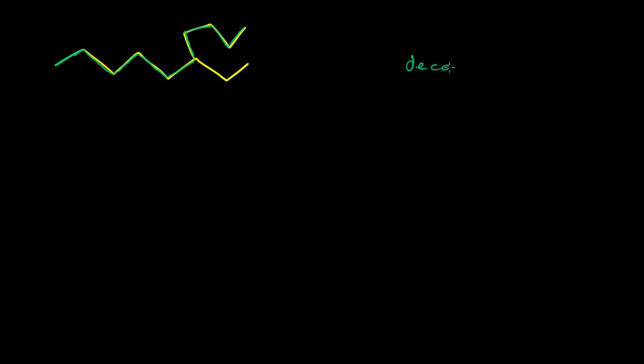So we can write decane for the backbone. And then it has a group right here. And this group consists of 1, 2 carbons attached to the backbone. The prefix for 2 carbons is eth. So this is an ethyl group.